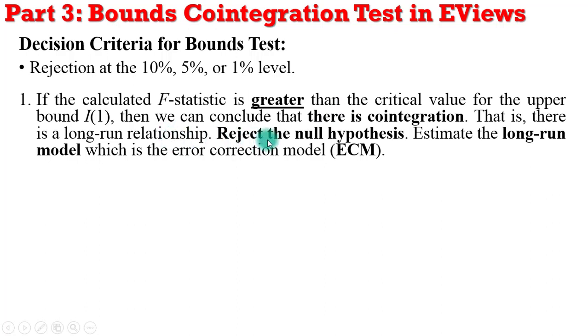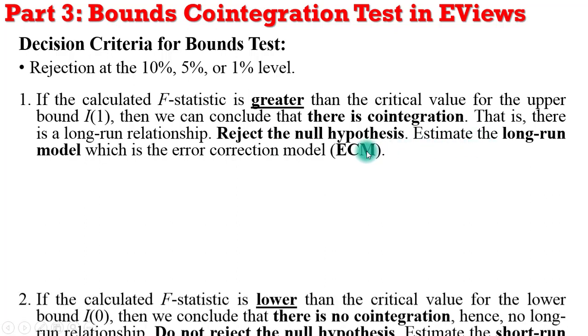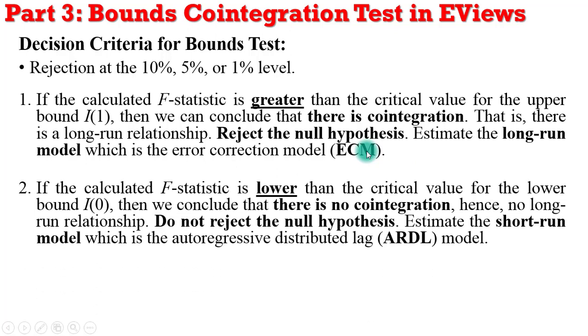After which we go ahead to estimate the long-run model, which is the error correction model. But what if the F value is lower than the critical bound? In that case, there is no cointegration between or among the variables, we cannot reject the null hypothesis, and we can only estimate the short-run model, which is the ARDL model.